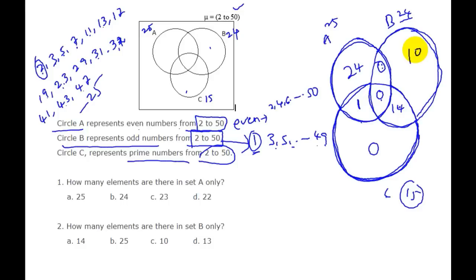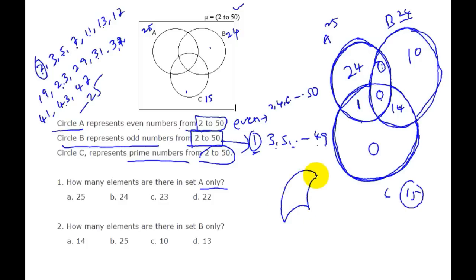Question 1: How many elements are in set A only? A only is 24, so B is the right answer. Question 2: How many elements are in set B only? B only is 10, so 10 is the right answer.